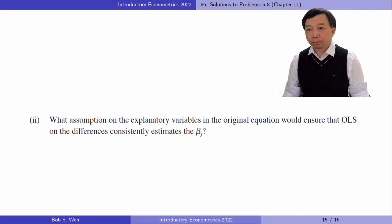In part 2, what assumption on the explanatory variables in the original equation would ensure that OLS on the differences consistently estimates the betas?